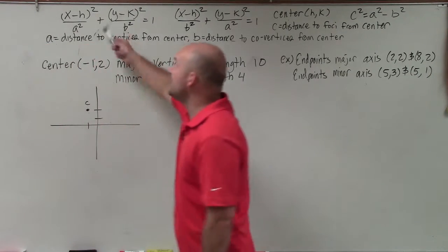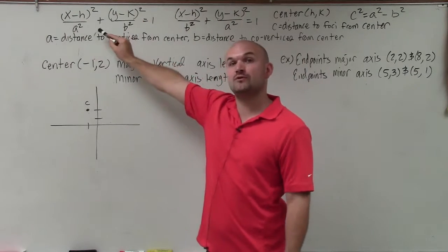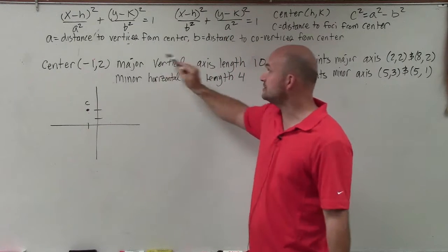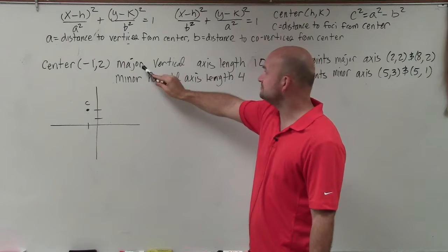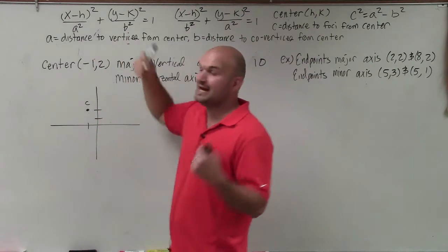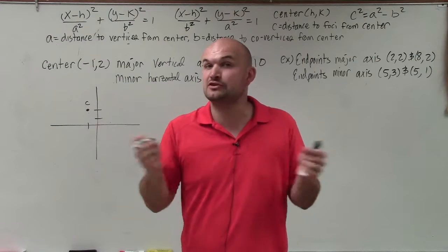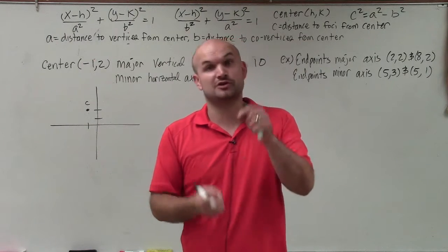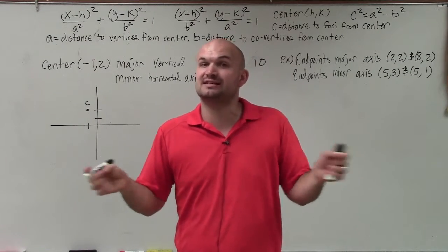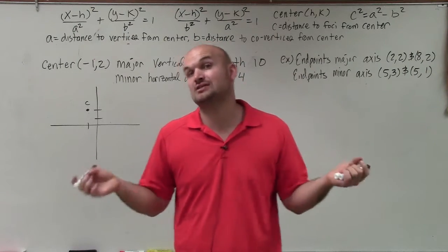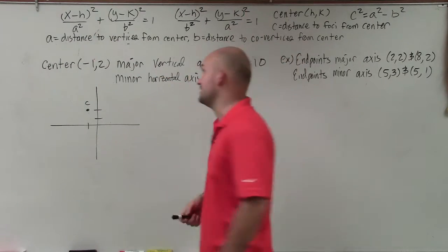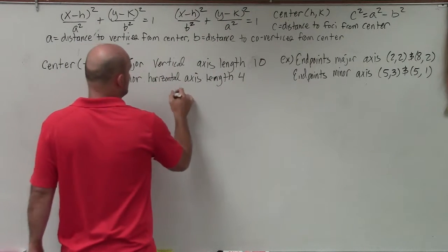We have two equations for an ellipse. This equation is for when we have a major axis that is horizontal, and this equation is for when we have a major axis that is vertical. It says major vertical axis, so we're going to use that format. Remember, a represents the distance from the center to your vertices, and b represents the distance from your center to your co-vertices. Since a is always larger, when a squared is under x you have a horizontal major axis; when a squared is under y you have a vertical major axis.